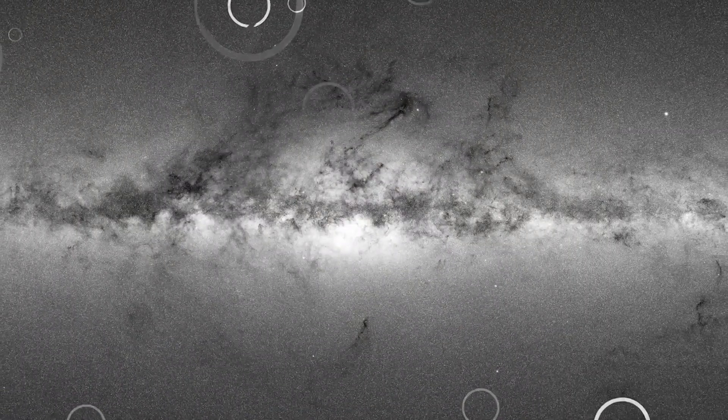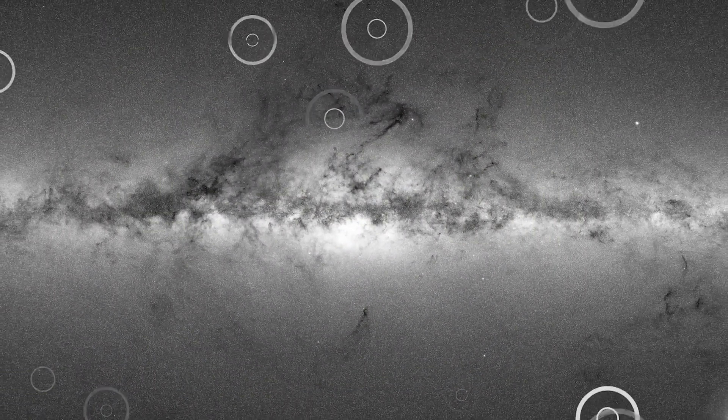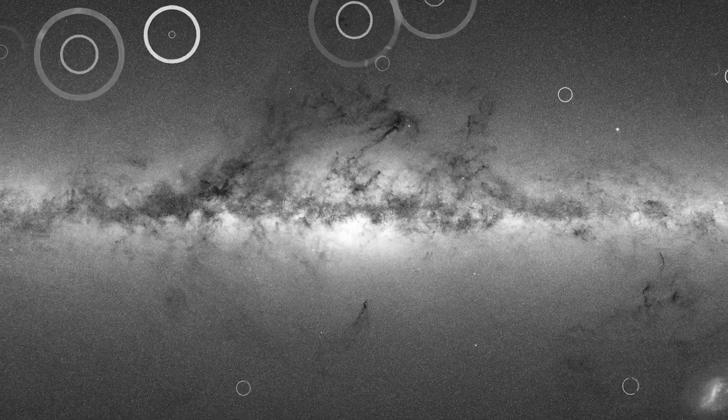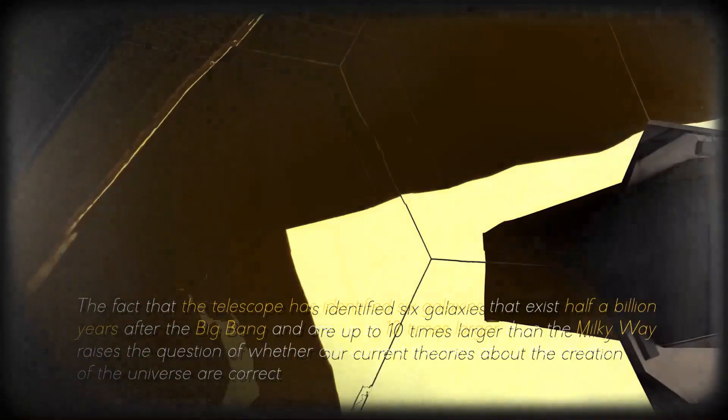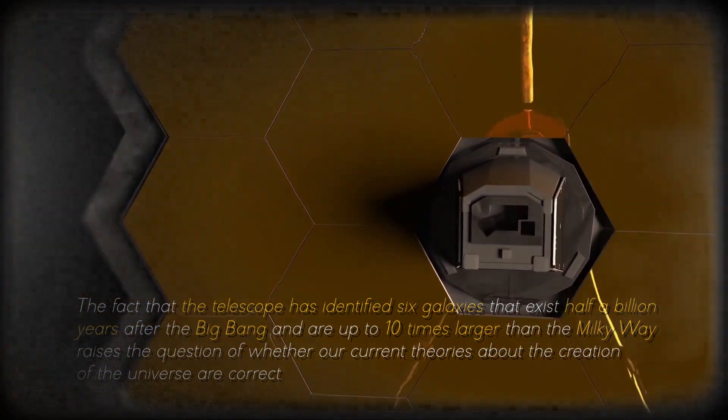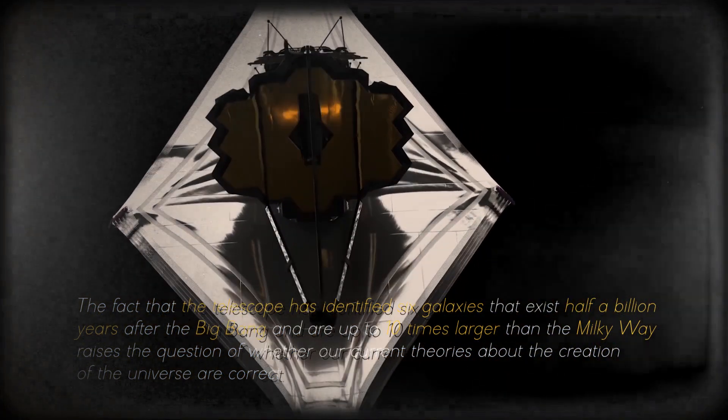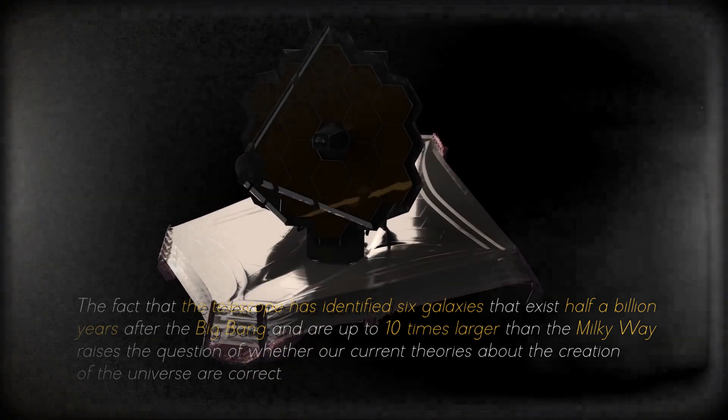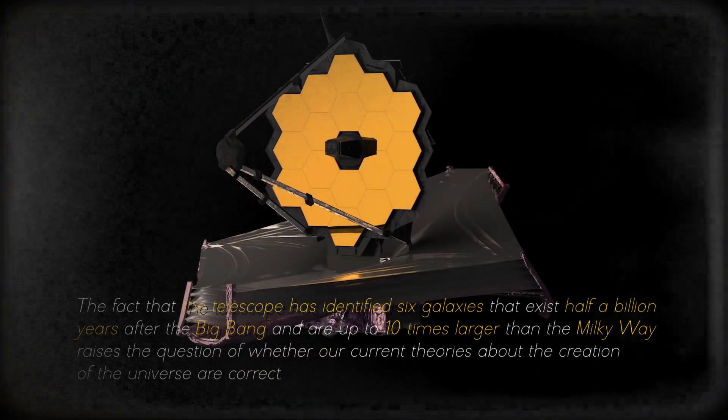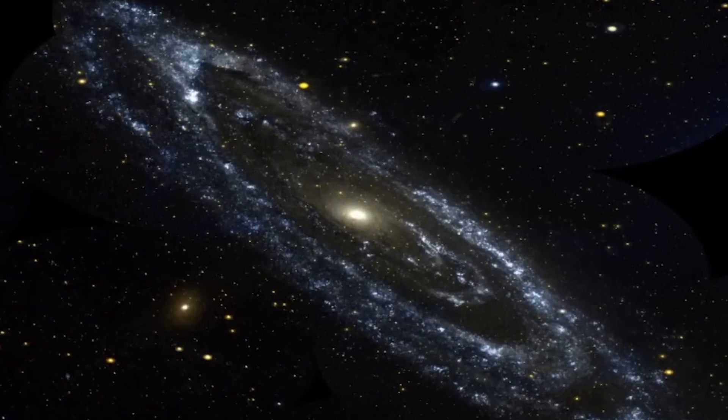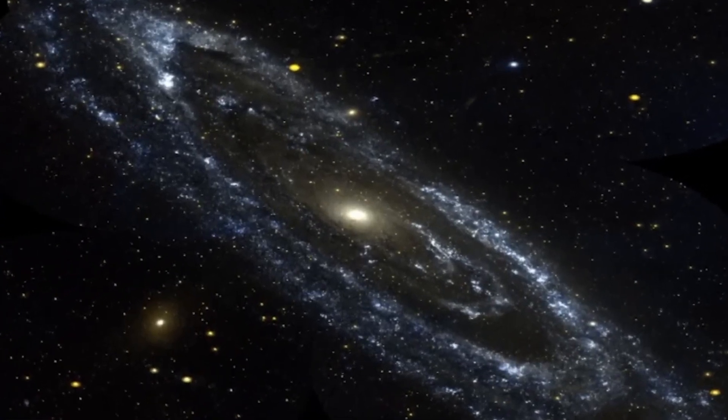Previously, these galaxies were thought to be less developed than the Milky Way, but the new findings suggest that we may be missing crucial information. The fact that the telescope has identified six galaxies that exist half a billion years after the Big Bang and are up to ten times larger than the Milky Way raises the question of whether our current theories about the creation of the universe are correct. Kaku explained that it takes billions of years to create a galaxy like the Milky Way, so it is strange to find such large, young, primordial galaxies. This discovery may require us to revise and rewrite textbooks on the beginning of the universe.